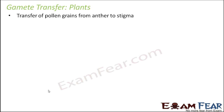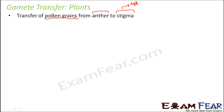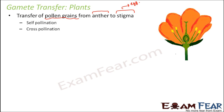In plants, the male gamete is in the pollen grains and the female gamete — the ovum — is in the ovule, accessed via the stigma. Pollen grains need to be transferred from the anther, which is the male reproductive part, to the stigma, which is the female reproductive part. This process of transferring pollen grains from anther to stigma is known as pollination. There are two types: self-pollination, where pollen moves from anther to stigma of the same flower, and cross-pollination, where it moves from the anther of one flower to the stigma of another.